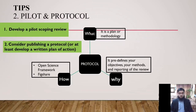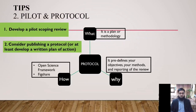Regarding where to register your protocol: JBI reviews can be registered via the JBI Systematic Review Register. Non-JBI reviews can be registered via an open research repository such as Open Science Framework, which is also recommended by PRISMA. Please note that PROSPERO accepts registrations for systematic reviews, rapid reviews, and umbrella reviews, but does not accept scoping reviews or literature scans.